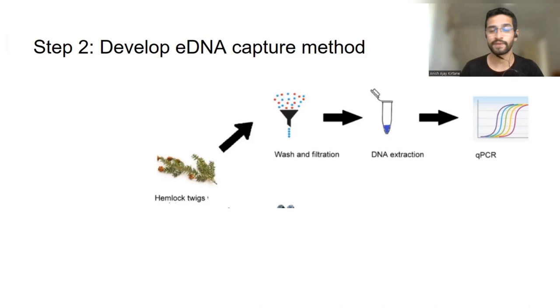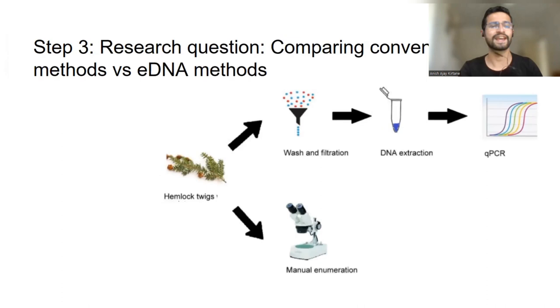So let's also look at what kind of questions we can answer. We can look at: are these eDNA methods, this new method we have developed, is it better than the conventional methods, which relies a lot on visual counting and observation and just looking at twigs under the microscope to see if we can find our target insects?